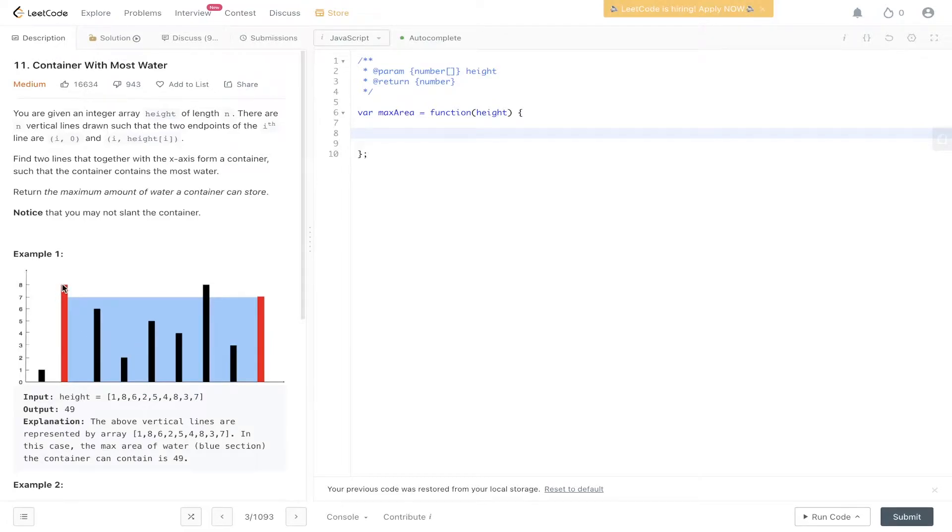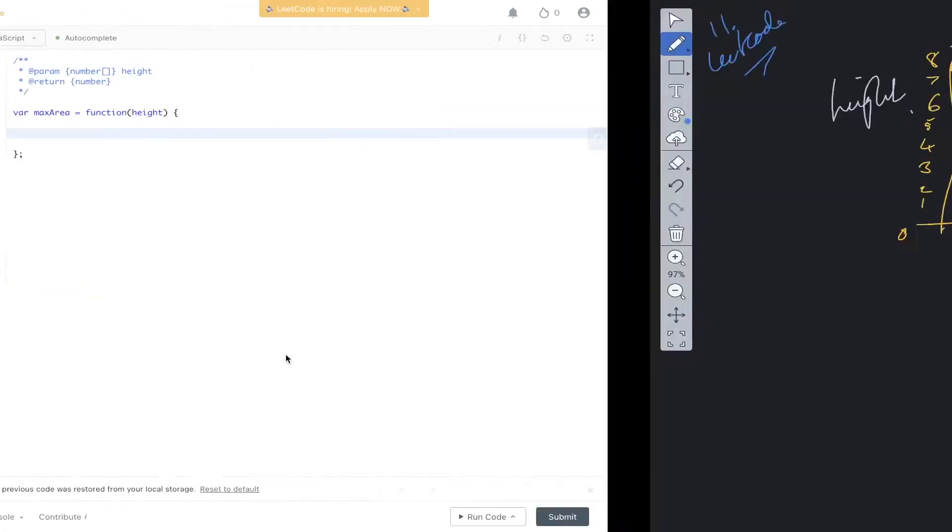What we'll do throughout the iteration is compare the height left and right and then work out the overall area that it stores. We'll store it in a maximum variable, constantly updating it as we go through working out the values.